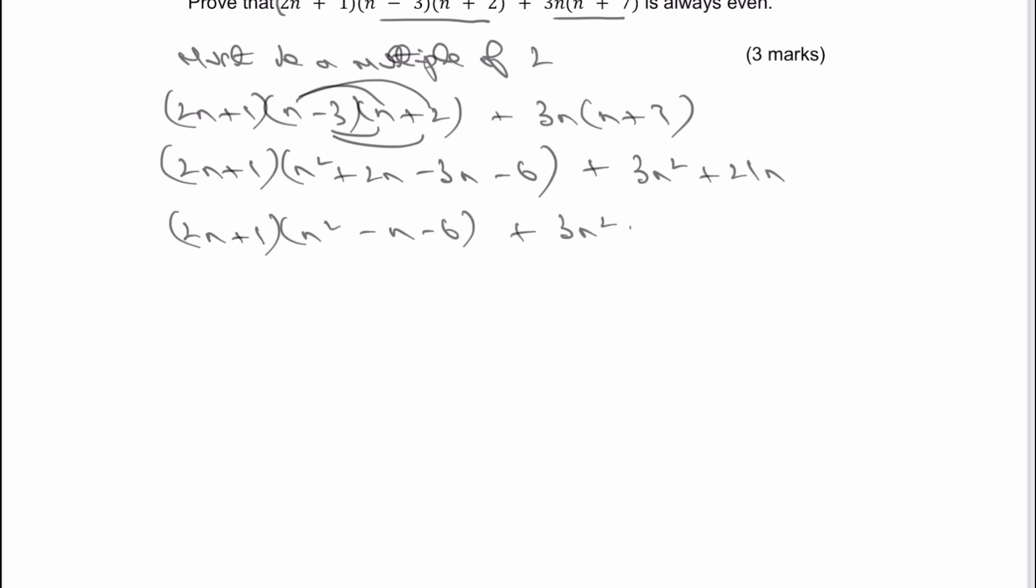So 3n squared plus 21n. So what I'm going to do now is I'm going to multiply out these first two bracketed terms.